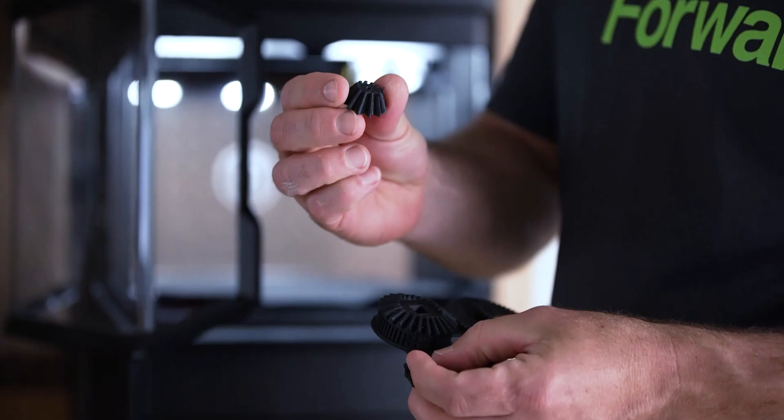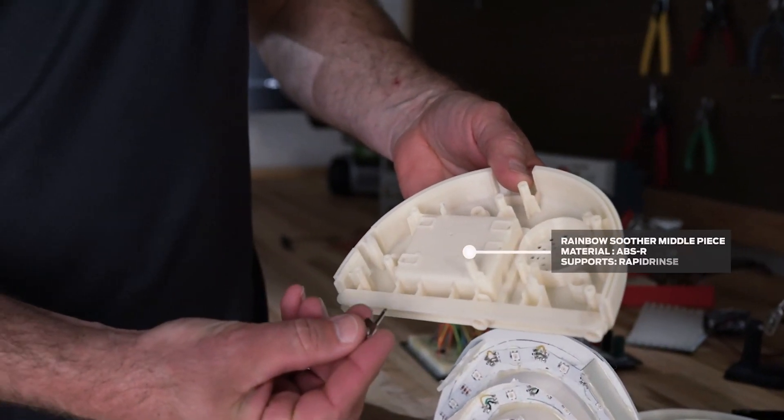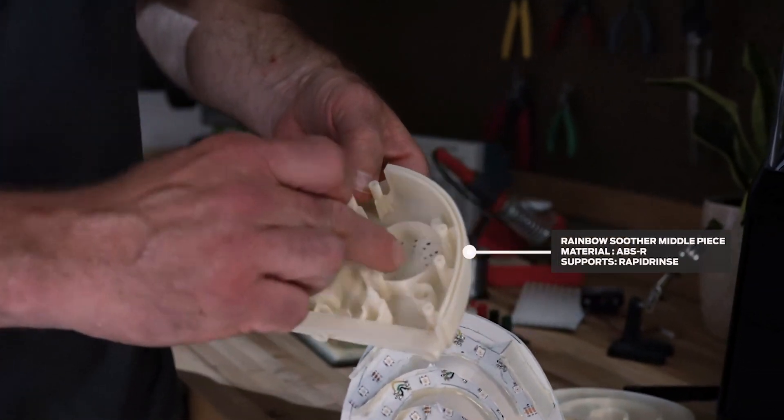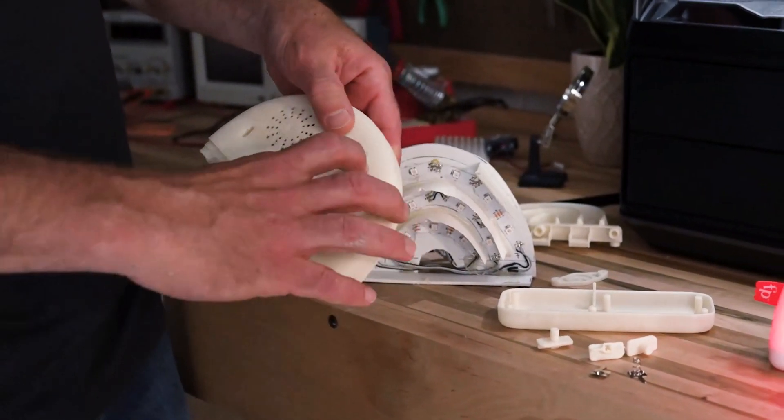We're also using nylon carbon fiber for gears. Testing the fit of components, we can place a speaker in here and battery box here, cover comes off.